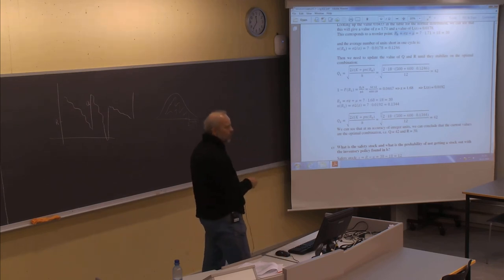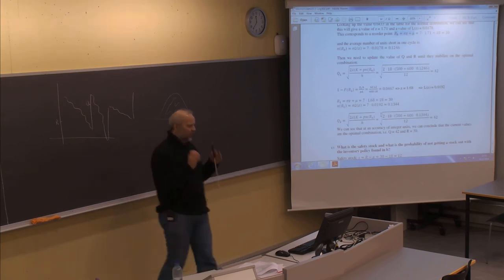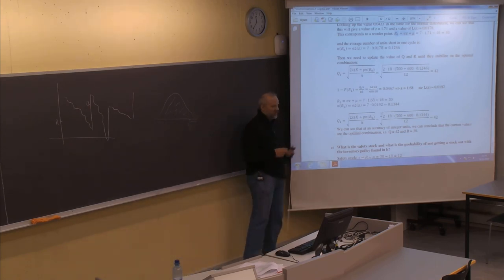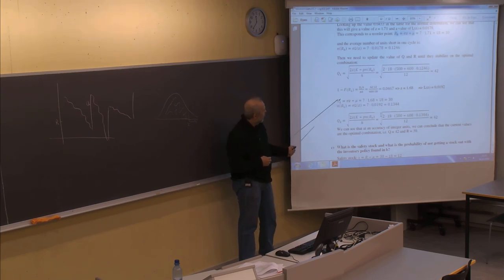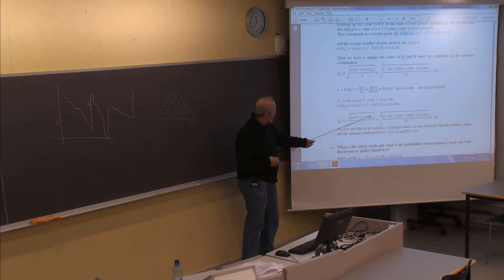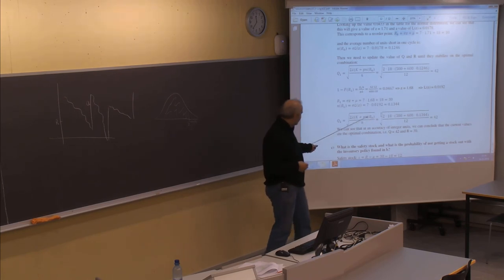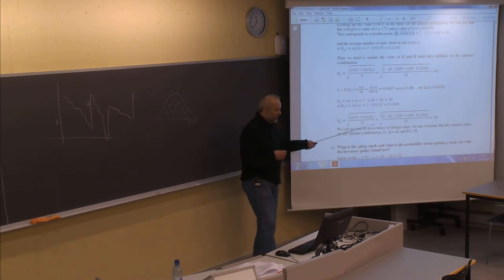A student asks: when should we stop if the values aren't equal? You stop when you're satisfied with the accuracy — for integer units, that's a natural stopping criterion. Another student points out that the Q2 formula should reference R1, not another label. The instructor confirms this is a misprint in the materials. Thank you for catching that.